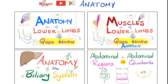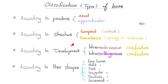You can classify bones in many ways, including according to position, according to structure, according to development — which is today's topic — and according to their shapes. We talked about all of these aspects before. Today, we'll talk about intramembranous versus intracartilaginous.